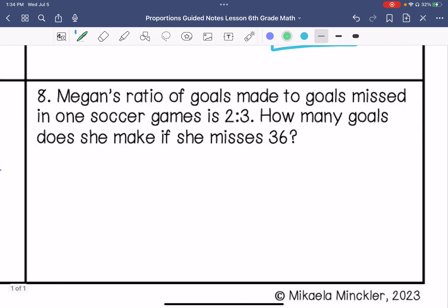All right, number 8. Megan's ratio of goals made to goals missed in one soccer game is 2 to 3. How many goals does she make if she misses 36?